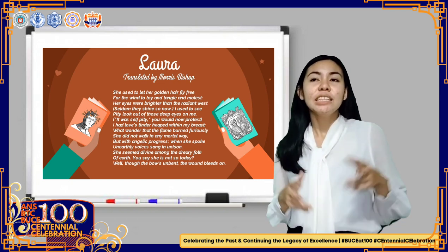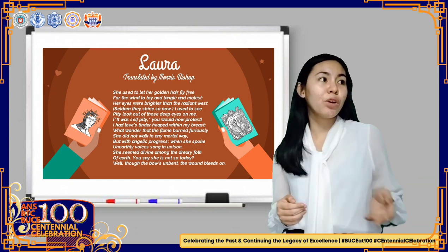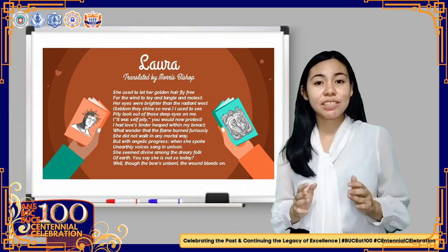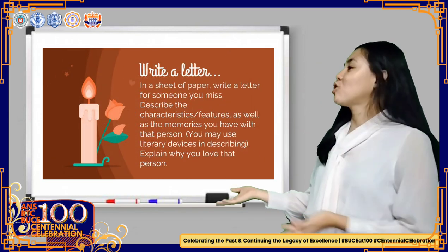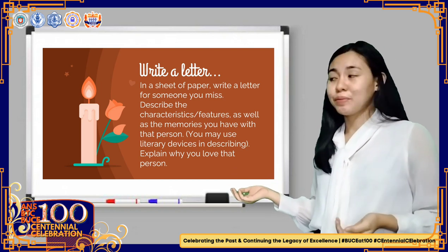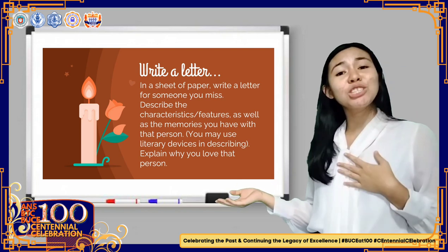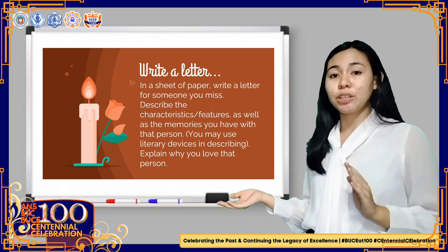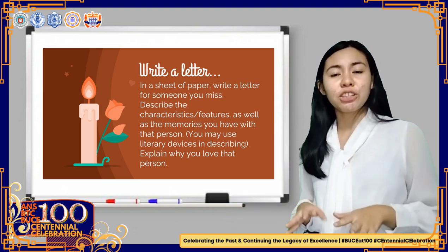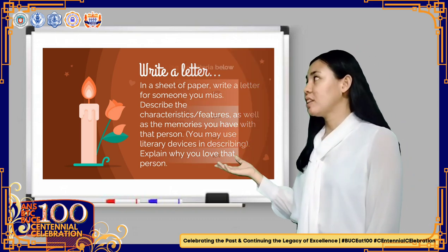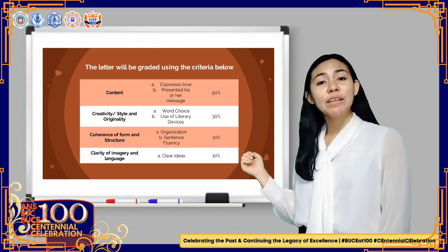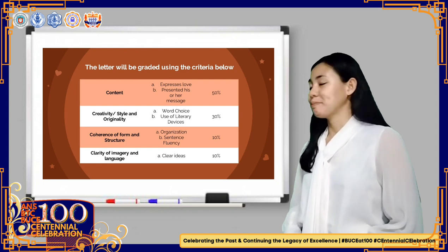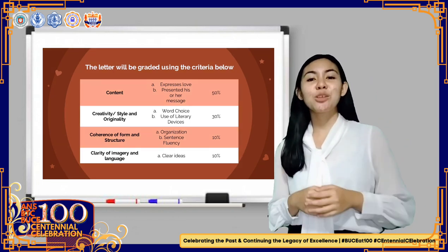Since the pandemic started, I know that many of us miss someone we often used to be with — because of social distancing. So I'd like you to relate the poem to your experiences. Let us write a letter. In a sheet of paper, write a letter to someone you miss. Describe the characteristics or features as well as the memories you have with that person. You may use some literary devices in describing. Explain why you love that person. You can also use art materials to decorate your letter. You will be graded using these criteria: content is 50%, creativity, style, and originality is 30%, coherence of form and structure is 10%, and clarity of imagery and language is 10%.